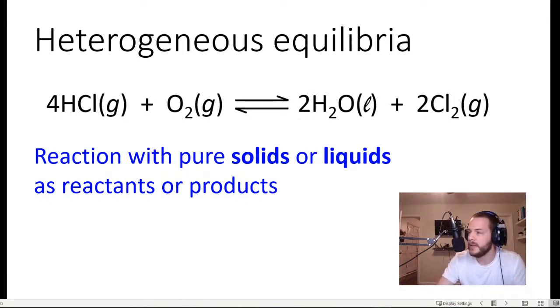So for instance, in this chemical reaction we have gaseous HCl reacting with gaseous oxygen to produce liquid water and some chlorine gas. So this is an example of a heterogeneous equilibrium.